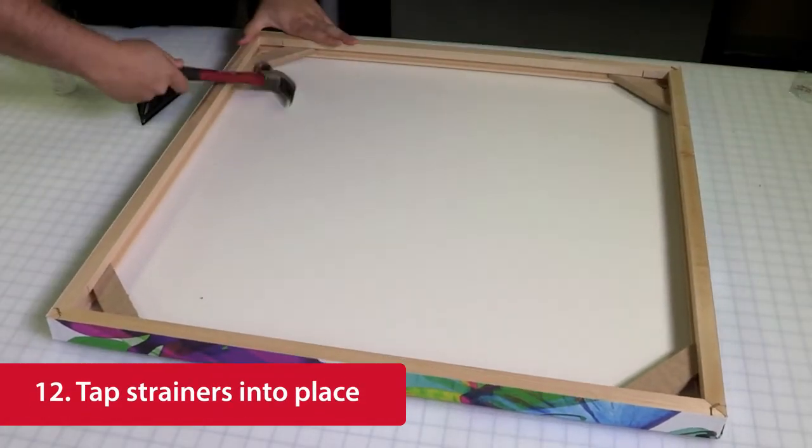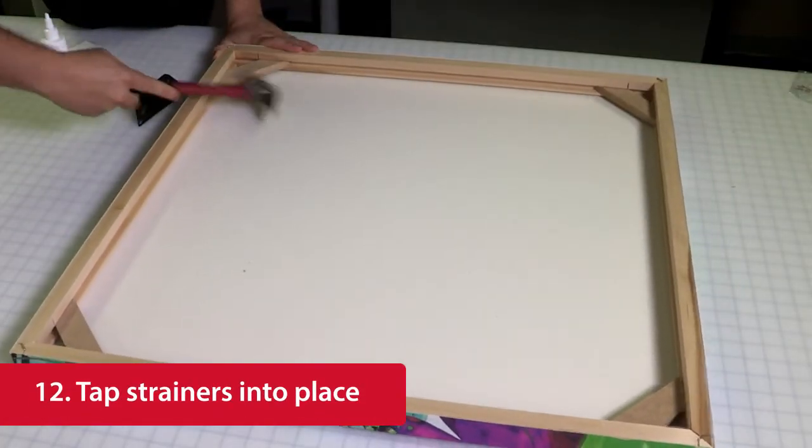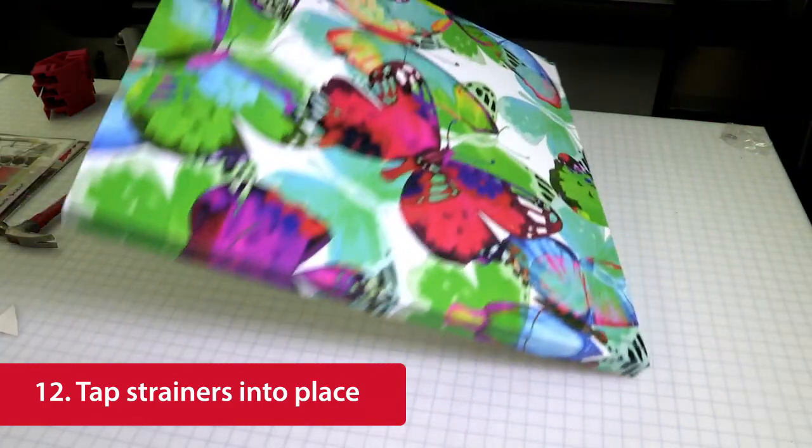Finally, tap the strainers into each of the four corners with your hammer and you're done! A perfectly wrapped print with GoFrame.